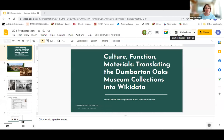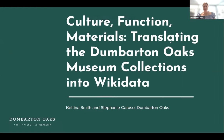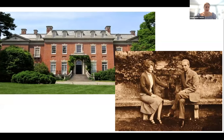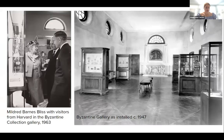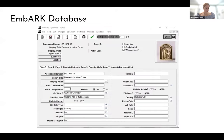Thanks for having us today. Dumbarton Oaks is a research institute and collection in the heart of Georgetown in Washington, DC. An American couple, Mildred and Robert Bliss, founded the institution, which they entrusted to Harvard University in 1940. Their mission was to create a place where scholars could study objects and conduct research in three main areas: Byzantine art, pre-Columbian art, and garden design. The core of the Dumbarton Oaks museum collection comprises the Blisses' objects, but to this day the museum still actively collects. Our project aim was to upload the Dumbarton Oaks museum collection to Wikidata so our collection data could be shared within a linked open data system.